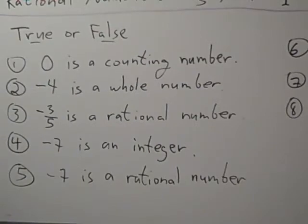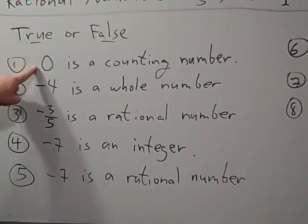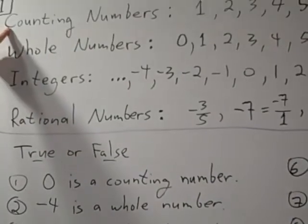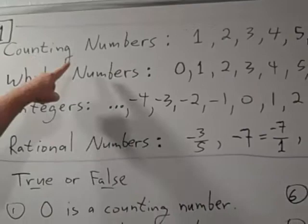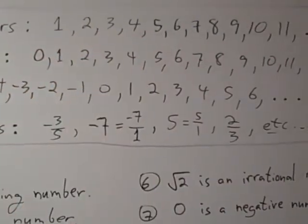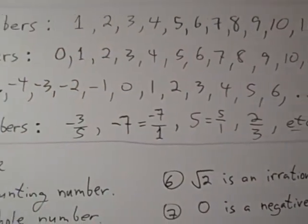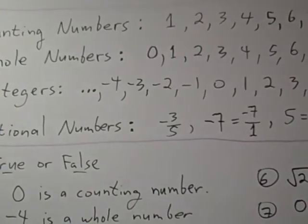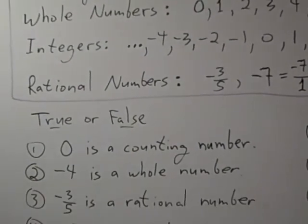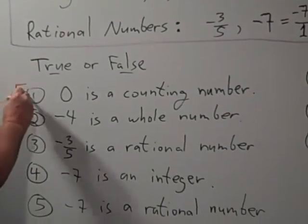Problem 1 asks us: is it true or false? Zero is a counting number. Notice I have listed the counting numbers above. They start with 1, then 2, 3, 4 — the numbers you count with. You don't count with zero, so zero is not a counting number. So number 1 is false.